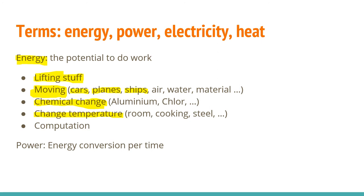Where do we use temperature change? In rooms, cooking, and also in production — for example steel must be melted before it can be transformed into useful shapes. Finally, there is one new type of energy consumption in the last 50 years: computation. The question is how much energy is needed for computation. In theory, computation itself doesn't need energy at all, but we don't have the technology to do that without energy — we have to use microchips, and they consume a lot. A microchip may use up to 100 watts, or 0.1 kilowatt-hours in an hour.